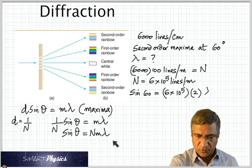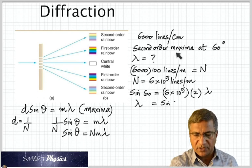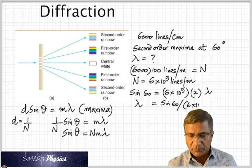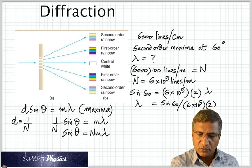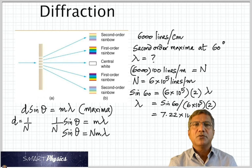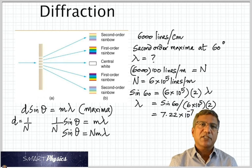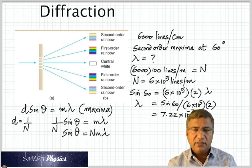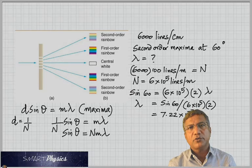Lambda is sin 60 divided by those two multiplied together. And that gives us 7.22 times 10 to the negative 7 meter, which is actually 722 times 10 to the negative 9, or 722 nanometers.